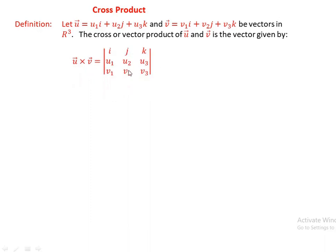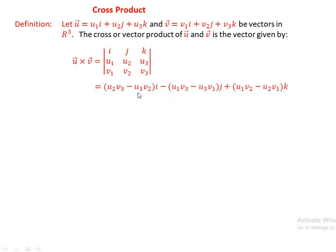The determinant of the matrix with rows [i, j, k], [u1, u2, u3], [v1, v2, v3], which expands as: determinant of [u2, u3; v2, v3]·i minus determinant of [u1, u3; v1, v3]·j plus determinant of [u1, u2; v1, v2]·k. This gives (u2·v3 minus u3·v2)·i minus (u1·v3 minus u3·v1)·j plus (u1·v2 minus u2·v1)·k.